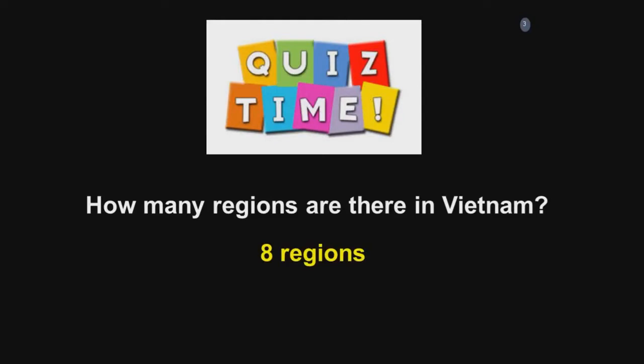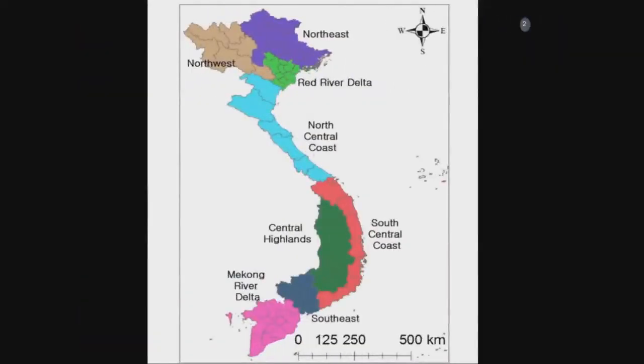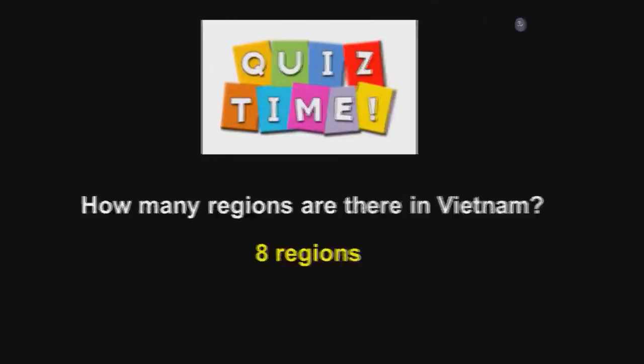Now, just to check your short-term memory — how many regions are there in Vietnam on that map? There are eight regions. These eight sub-regions, with different features in terms of geography, location, and people, decide the differences in the manufacturing culture of each region.